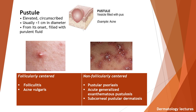Pustule. A pustule is an elevated, circumscribed lesion usually less than one centimeter in diameter, filled with purulent fluid. There are two types: follicularly centered and non-follicularly centered. Examples of follicularly centered pustules are folliculitis and acne vulgaris. Non-follicularly centered pustules include pustular psoriasis, acute generalized exanthematous pustulosis, and subcorneal pustular dermatosis.